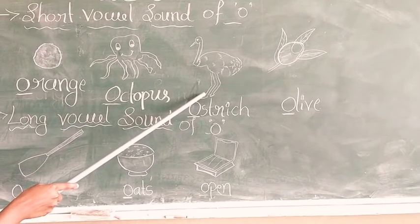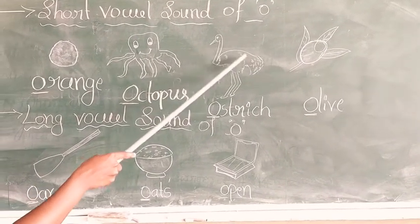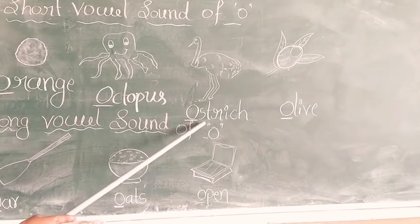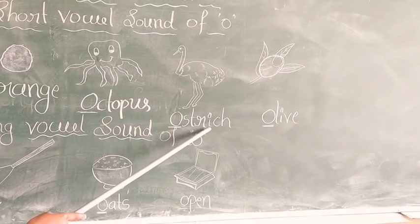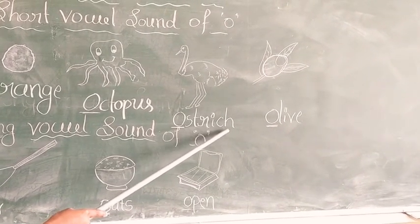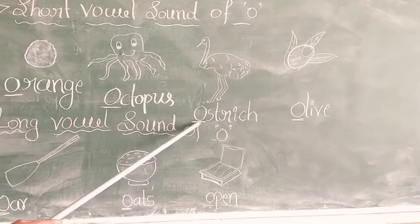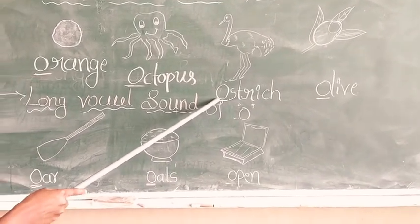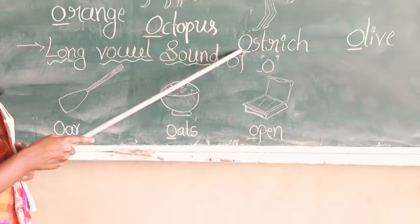The next one: ostrich. O-S-T-R-I-C-H, ostrich. This is a short mobile sound of O.